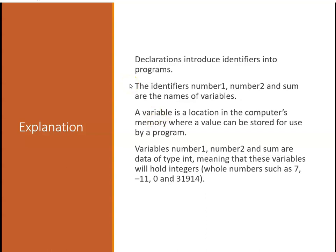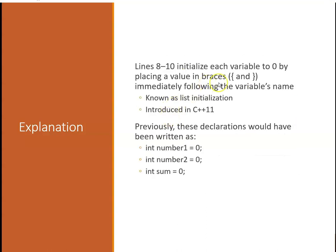Declarations introduce identifiers in programs. The identifiers number one, number two, and sum are the names of variables. A variable represents a location in memory where a value can be stored for use by a program. Variables number one, number two, and sum are of data type int, meaning these variables will hold integers - they can only hold integers, you can't put words in them. Lines eight to ten of the example initialize each variable to zero by placing a value in braces following the variable name. That's known as list initialization, a new feature introduced in C++11. Previously you would just do an assignment statement equals zero - you can do either one.